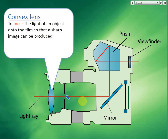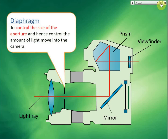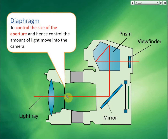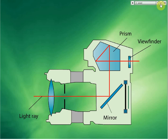After that we have the diaphragm. This diaphragm controls how much light is allowed to go in — it controls the size of the aperture. The aperture is this hole or ring here. By controlling the size of the aperture, it controls how much light is allowed to enter. That is the function of the diaphragm.